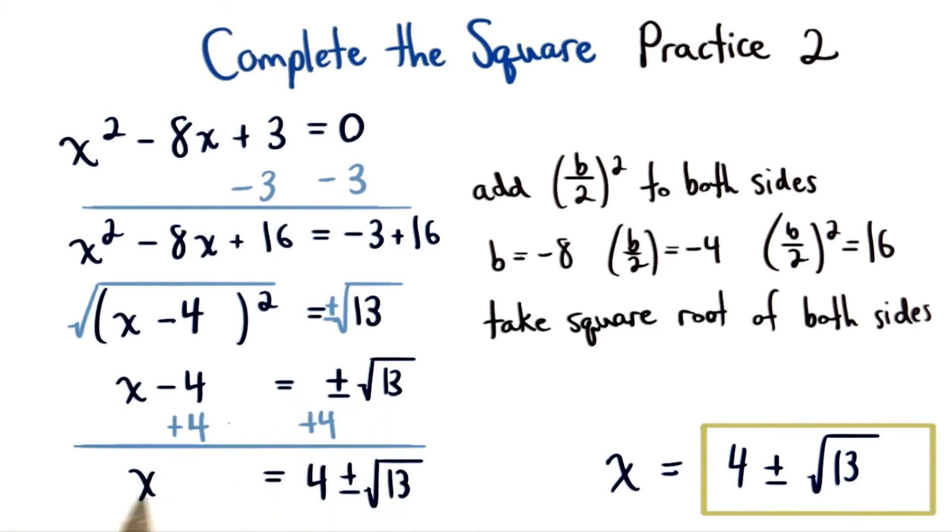We add 4 to both sides to get x by itself, so x is equal to 4 plus or minus the square root of 13.